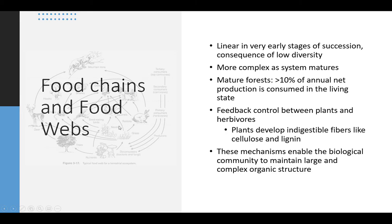He also talks about food chains and food webs. Early on in succession, species diversity is going to be pretty low, and food chains and food webs become more complex as the system matures. In mature forests, less than 10% of the annual net production is consumed, so a lot is lost through plant litter. A feedback control between plants and herbivores keeps things in balance — plants develop indigestible fibers like cellulose and lignin. Lignin is what makes trees hard and is very difficult to digest, which helps keep plants living. These mechanisms enable the biological community to maintain a large and more complex structure.